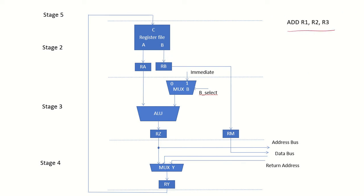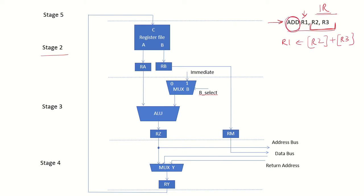Let's look at an example: a simple arithmetic instruction. Assuming that the first operand is the destination register, the contents of R2 and R3 will be added and stored back in register R1. In the fetch stage, this instruction is brought and placed in the instruction register. In the decode stage, the opcode is decoded and source operands R2 and R3 are read from the register file and placed in inter-stage registers RA and RB. In stage 3, the appropriate control signal for an ADD operation is sent to the ALU, R2 is passed in and 0 is selected at the MUX so R3 is passed to the ALU.